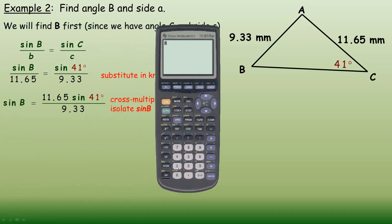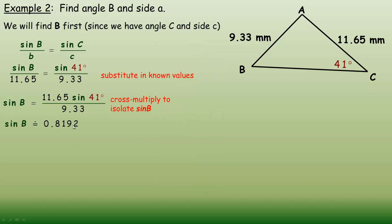On the calculator: 11.65 times sine 41, then divide by 9.33. Be careful with brackets so the calculator doesn't divide 41 by 9.33 before taking the sine — you want sine of 41 divided by 9.33. I tell students to round to 4 decimal places at this stage; rounding too quickly could throw your angle off by a degree or two. The result is approximately 0.8192.